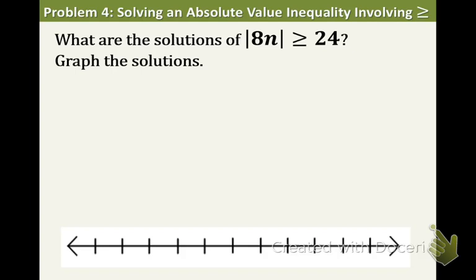Okay, let's try example 4. We have absolute value of 8n is greater than or equal to 24. So first of all, this is going to be an or inequality. That means they're going to, in the graph, the lines are going to be going in opposite directions. They're not going to overlap.